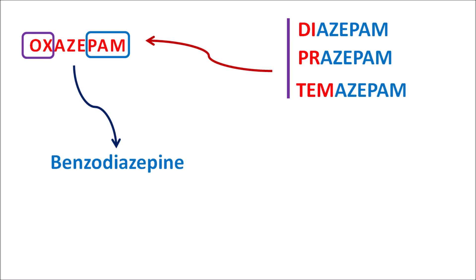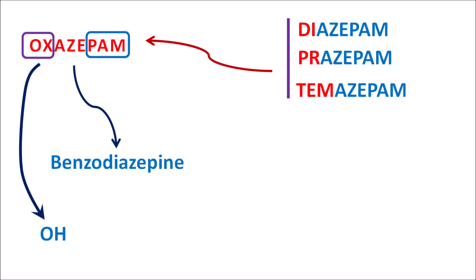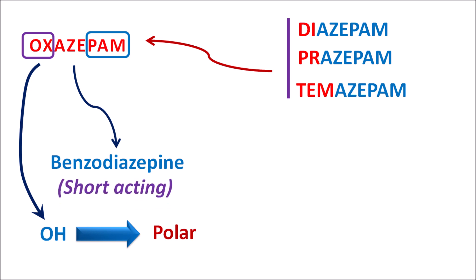We can identify the suffix 'Ox' which can be remembered as an OH group, since Oxegepom has a OH group at the third position. Since it is a 3-hydroxy derivative, this drug is somewhat polar in nature, so it is easily water soluble. Since this drug is water soluble it can be easily excreted in the urine. That's why Oxegepom is one of the short-acting benzodiazepines.